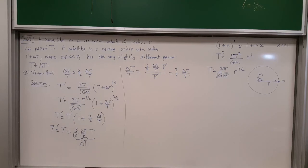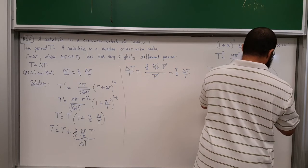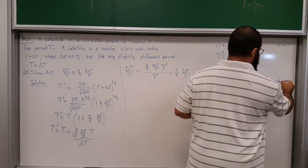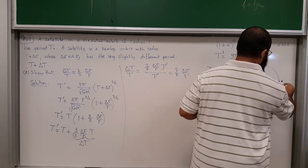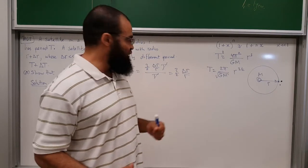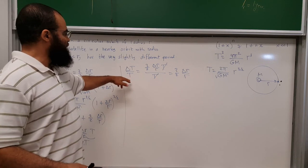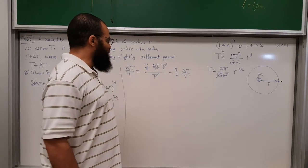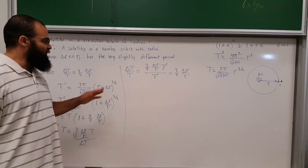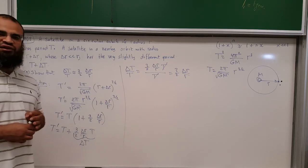This binomial approximation formula will be used a lot this semester and next semester. The two satellites have slightly different periods, so eventually the outer one lags behind the inner one by a full period. For part b, they ask how long that takes — I'll leave that as an exercise.